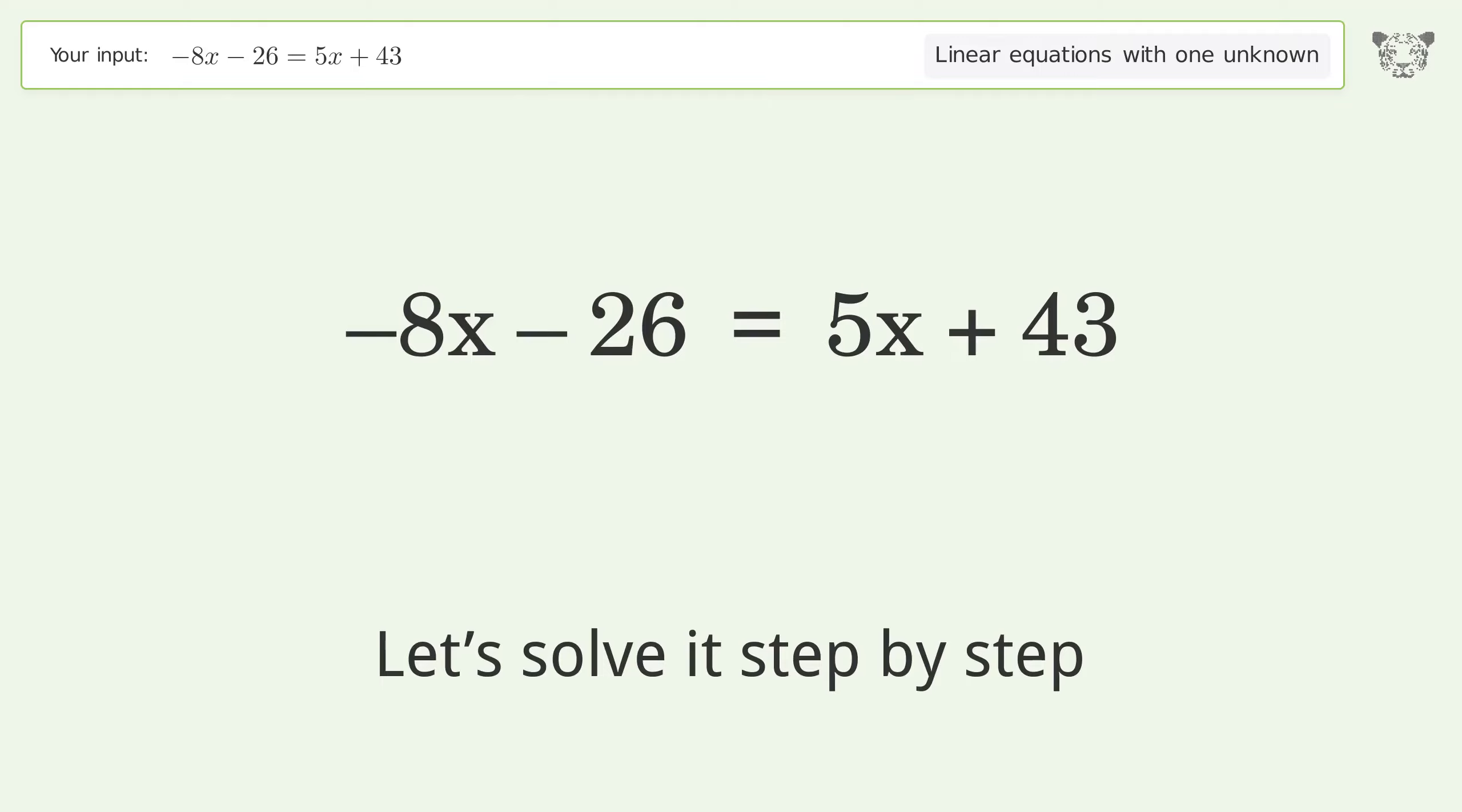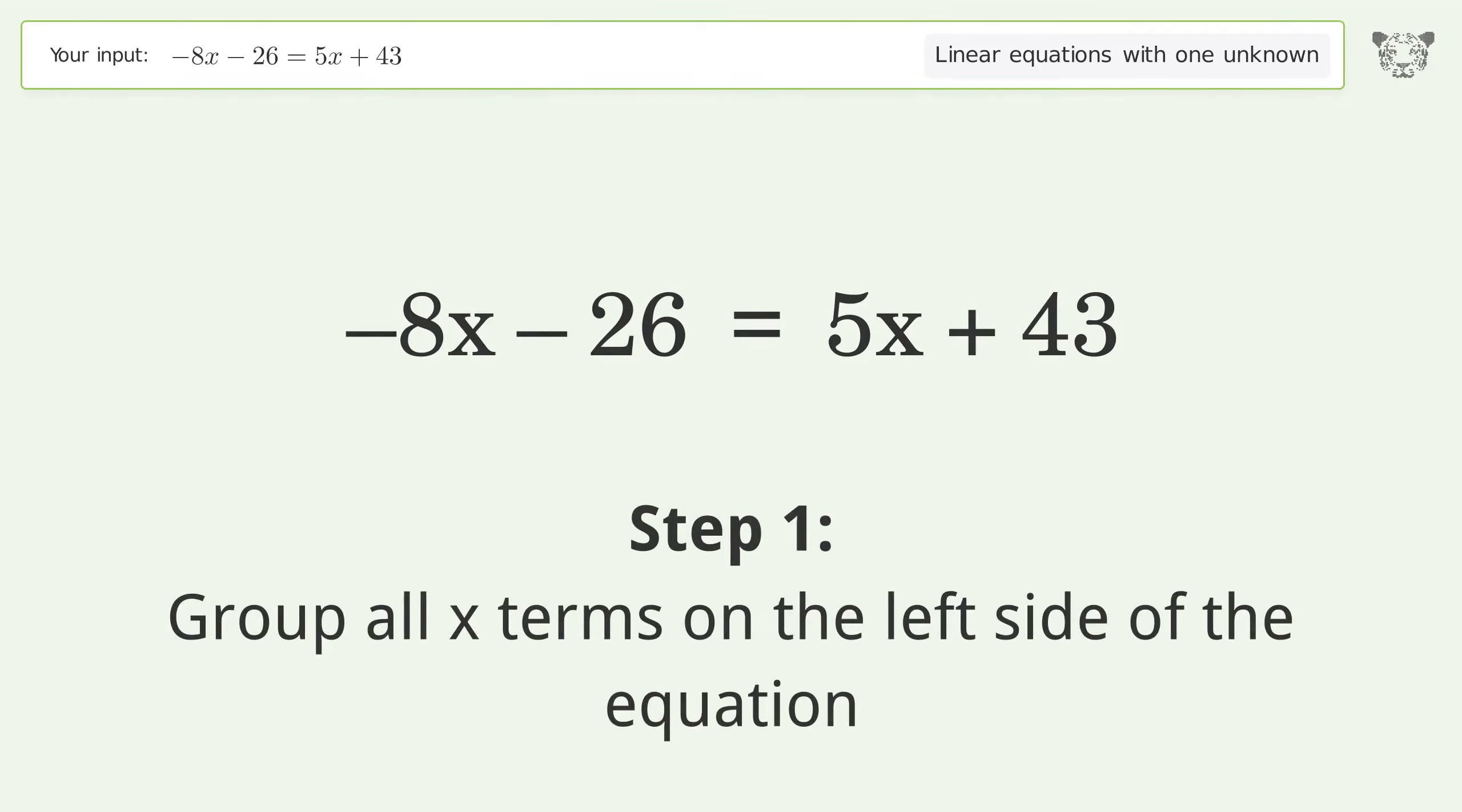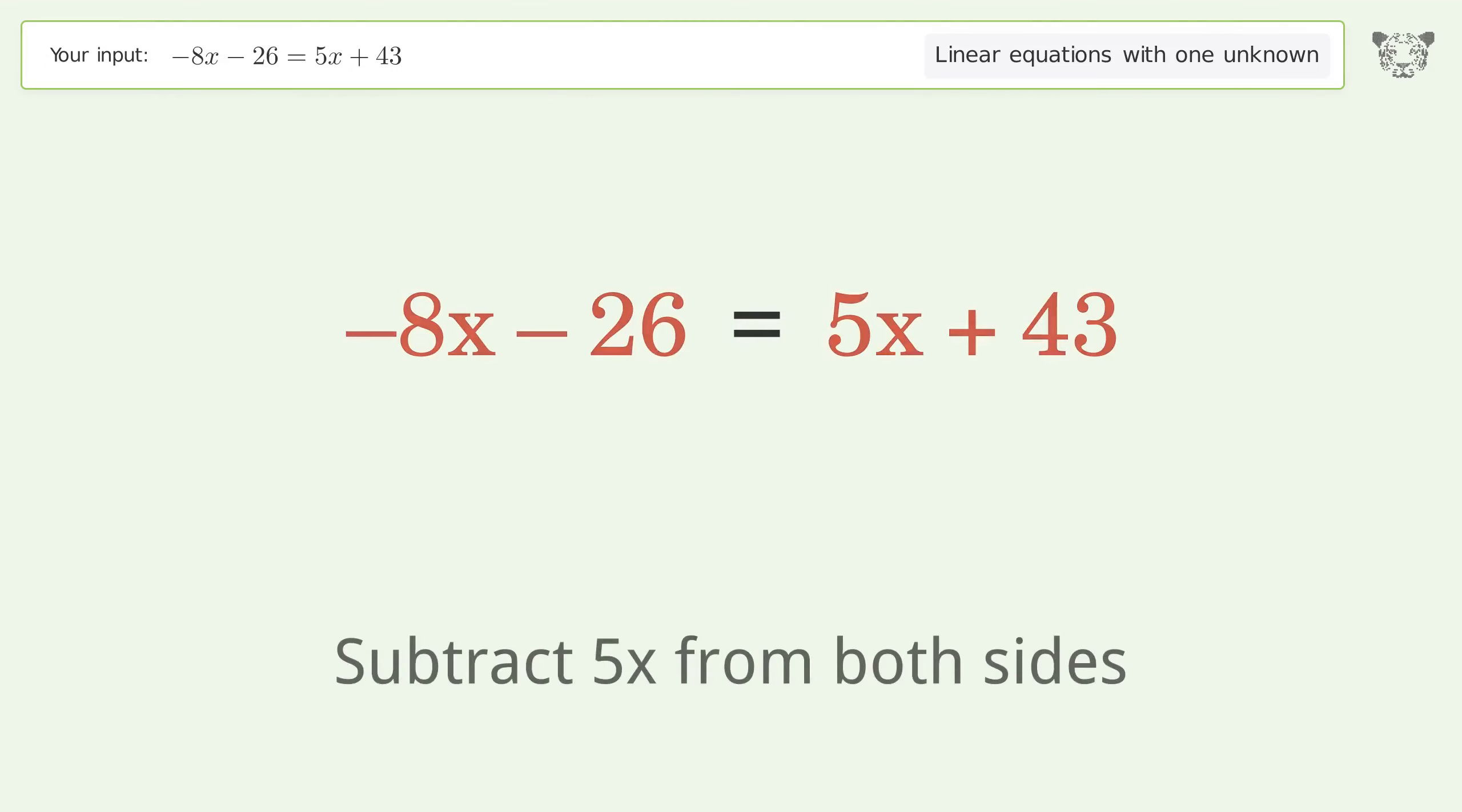Let's solve it step by step. Group all x terms on the left side of the equation. Subtract 5x from both sides.